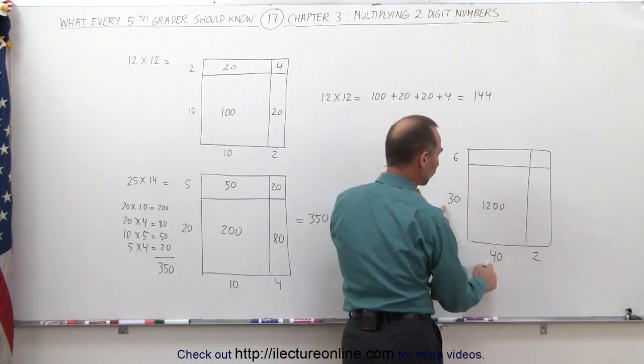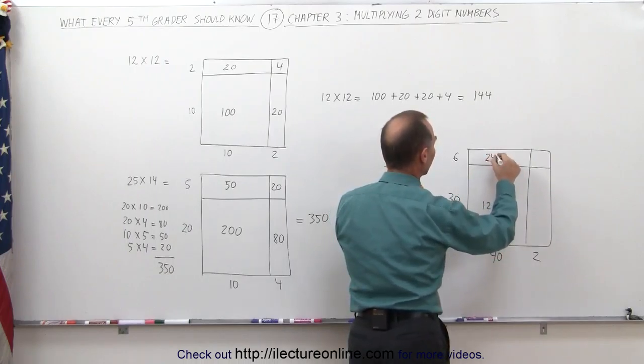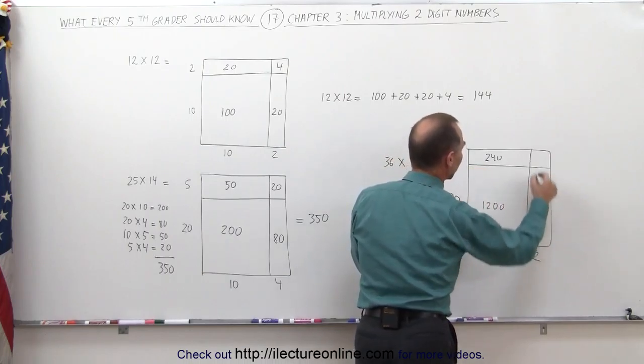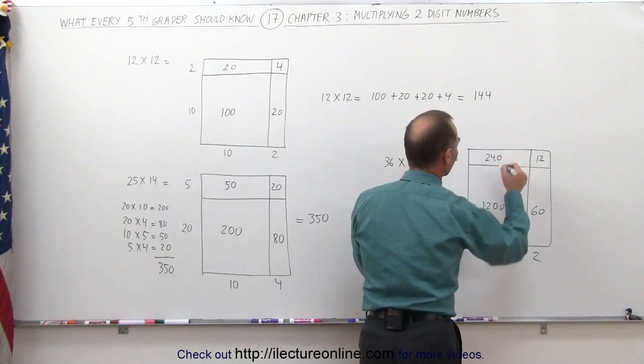40 times 6, 6 times 4 is 24, add a 0, you get 240. 30 times 2 is 60, and 6 times 2 is 12, and now all you have to do is add those together.